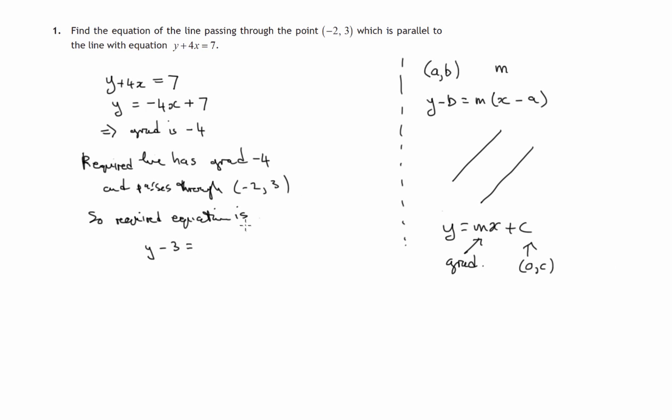equals gradient m, which we know is negative 4, times x minus the x coordinate. So, x minus negative 2, that's x plus 2.